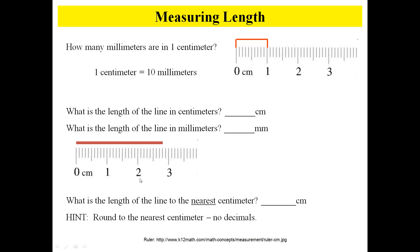What is the length of the line in millimeters? We've got 10 millimeters, 20 — so that would be 28 millimeters. And what is the length of the line to the nearest centimeter? We're going to round: if it's 2.8 centimeters, the nearest one would be 3 centimeters.